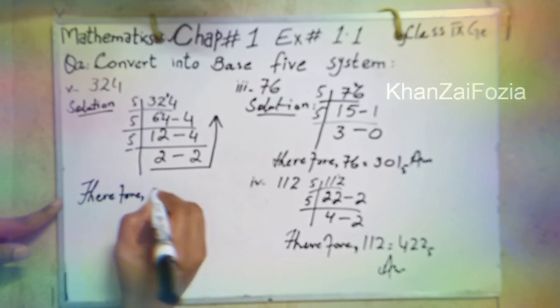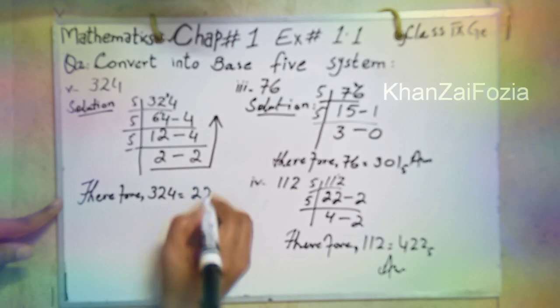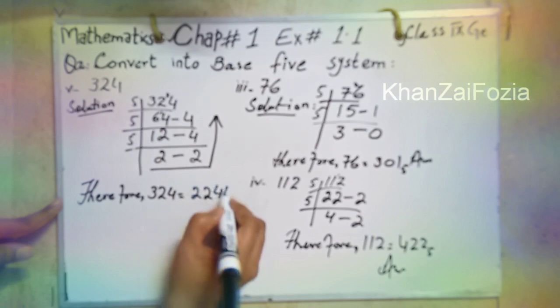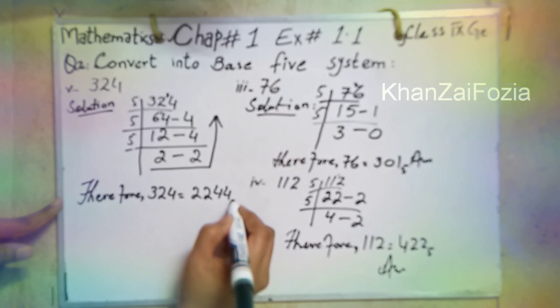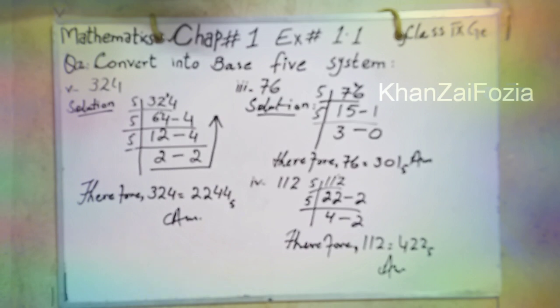Therefore, 324 in base 5 system is 2244 base 5. Now finish question number 2. All 5 parts, 1 till 5.